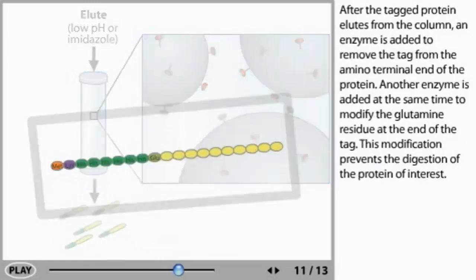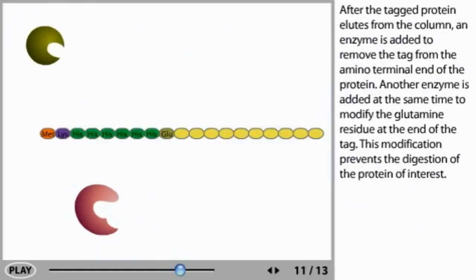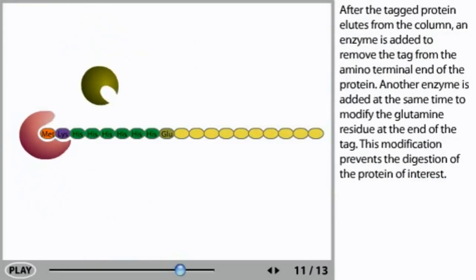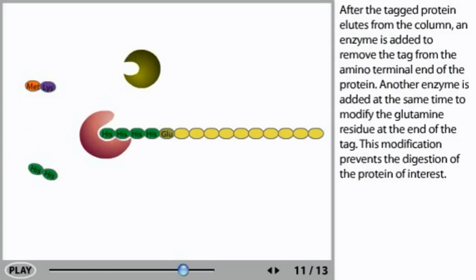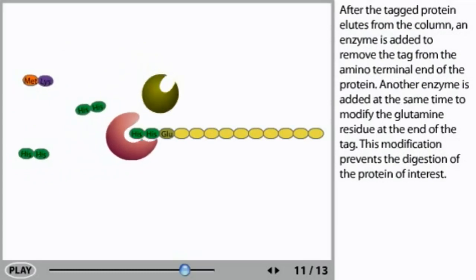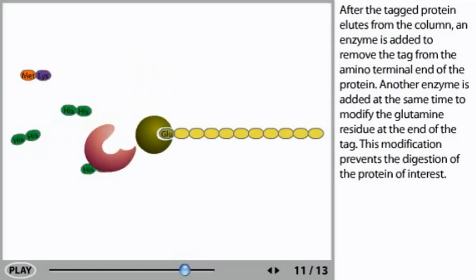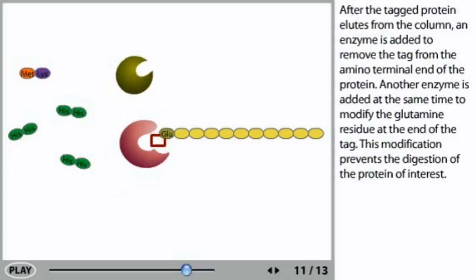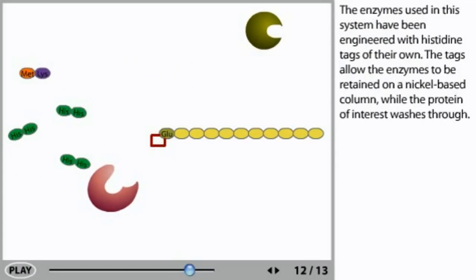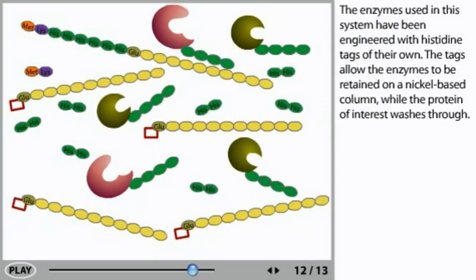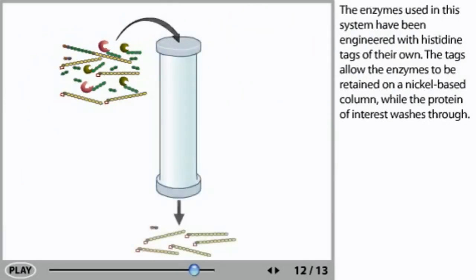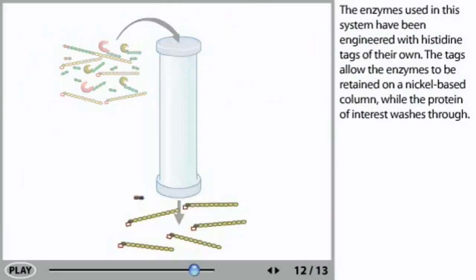After the tagged protein elutes from the column, an enzyme is added to remove the tag from the amino terminal end of the protein. Another enzyme is added at the same time to modify the glutamine residue at the end of the tag. This modification prevents the digestion of the protein of interest. The enzymes used in this system have been engineered with histidine tags of their own. The tags allow the enzymes to be retained on a nickel-based column while the protein of interest washes through.